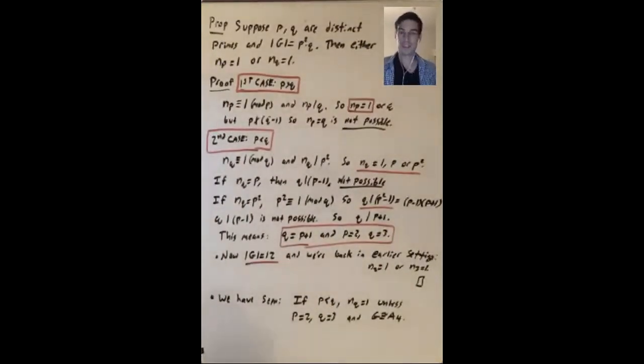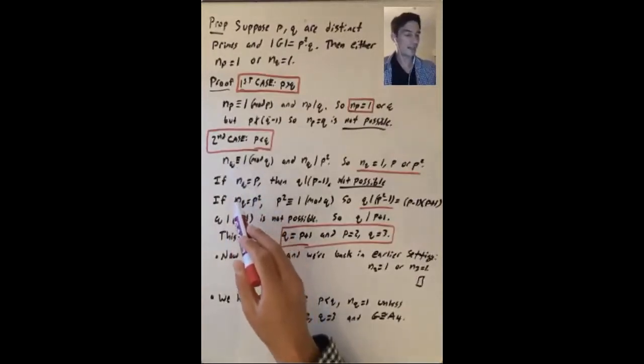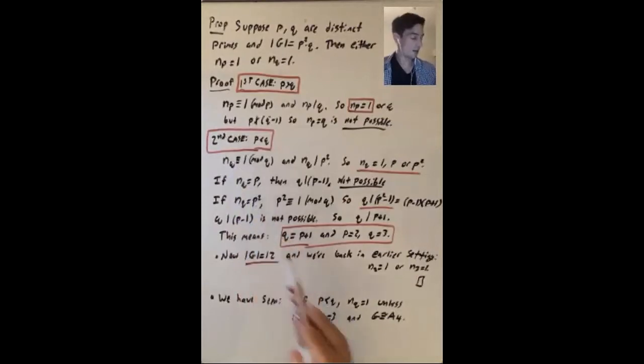So as a summary, what have we seen? If p is less than q and g is a group of order p squared times q, then nq equals 1, except nq could be equal to p squared in the one case that p equals 2 and q equals 3.